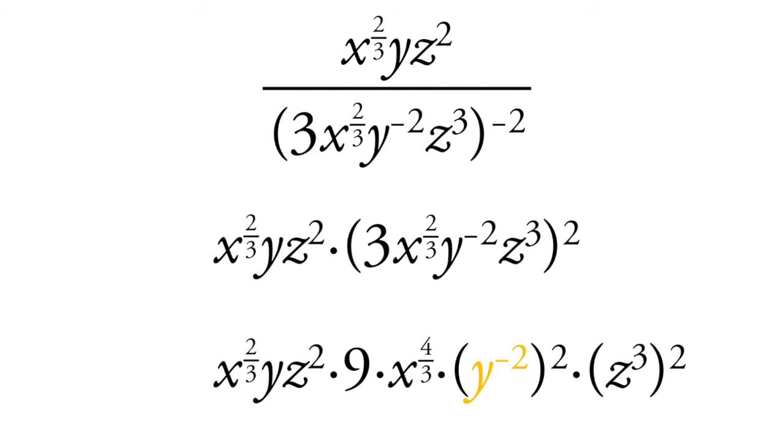And this y to the negative 2, we're going to multiply that negative 2 by 2, and we get y to the negative 4th. And then we're going to take this z cubed and multiply it by 2, and we're going to get z to the 6th.